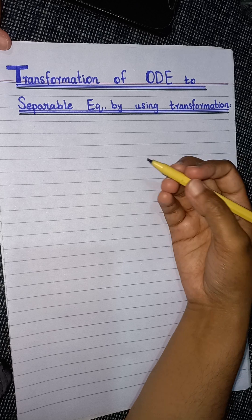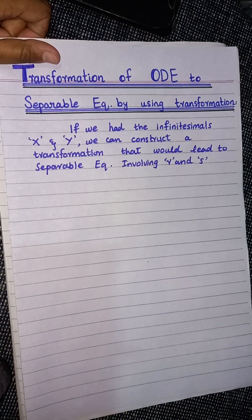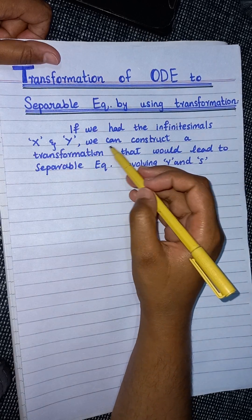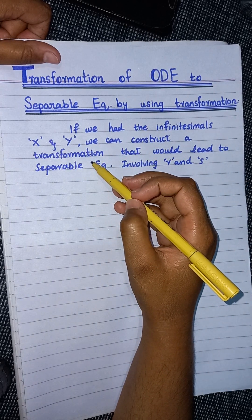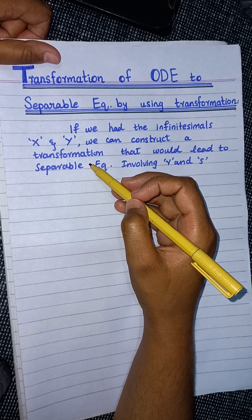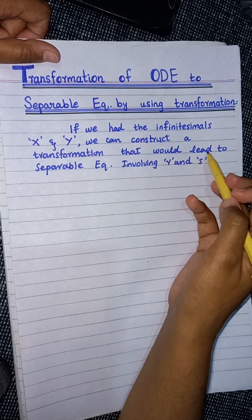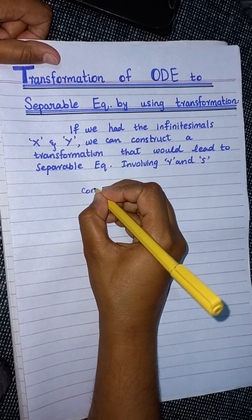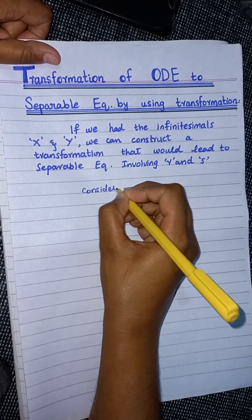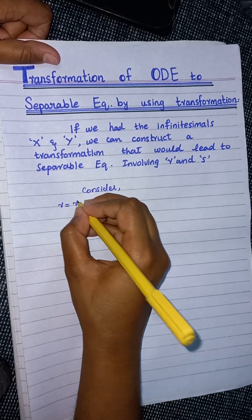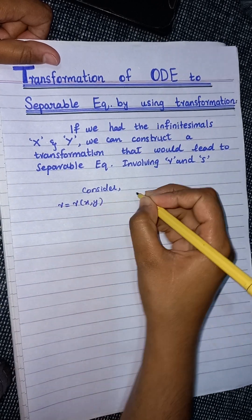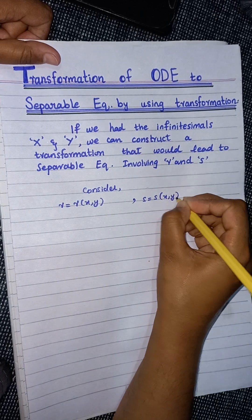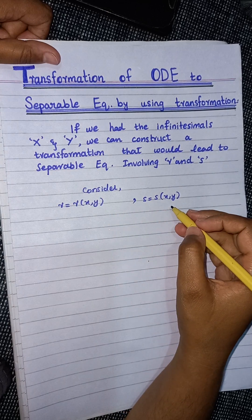Now, if we have the infinitesimals ξ and η, we can construct a transformation — or by using canonical variables — a transformation that would lead to a separable equation involving r and s. We consider that r is a function of x and y, and s is also a function of x and y, and we have defined a transformation in this way.